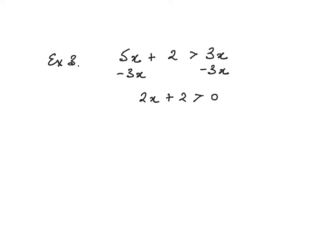What I want to do now is to get rid of the plus 2. I want to leave the 2x on its own. 2x is greater than minus 2. The last thing to do is to divide by 2. x is greater than minus 2 over 2, and x is greater than minus 1.